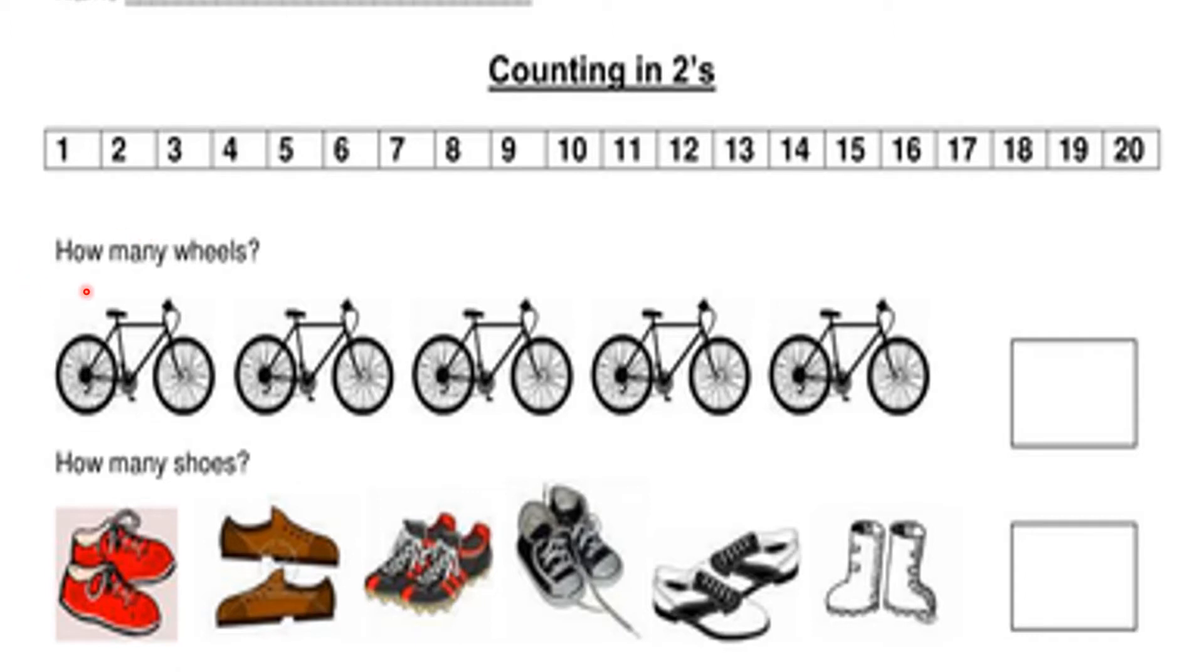Next question. How many wheels are there? There are 5 bicycles. Each bicycle has a pair of 2 wheels. Keep in your mind. Number 2. Add 2 more. After 2, skip next number 3. Yes. What comes after 3? 4. So, there are 4 wheels now.